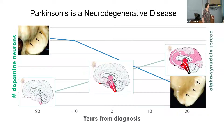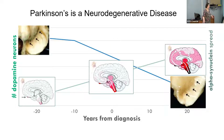Regarding a patient with positional vertigo: that would not complicate staging for Parkinson's disease because vertigo is a totally different condition. We would not say a patient is stage four because they're falling due to vertigo — that would be cruel. We would wait until the vertigo resolves and then assess the Parkinson's disease.